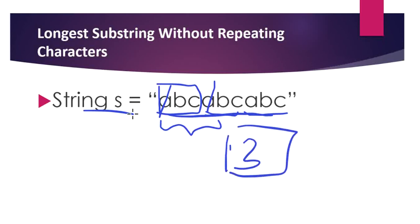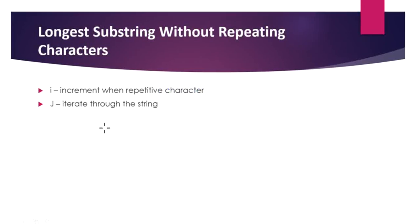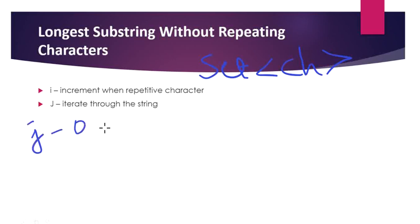The output for 'abcabc' is three. To program this, we use the two-pointer method to iterate the string and identify the highest length of the substring without repeating characters. We first create a set, which is used to store the characters from the string. Pointers i and j iterate from zero to n, and i increments only if a repetitive character is found.